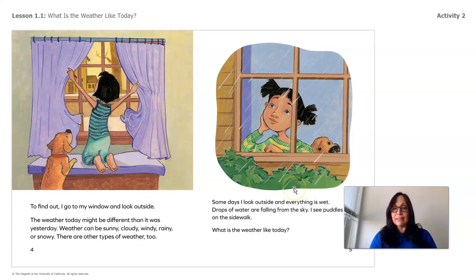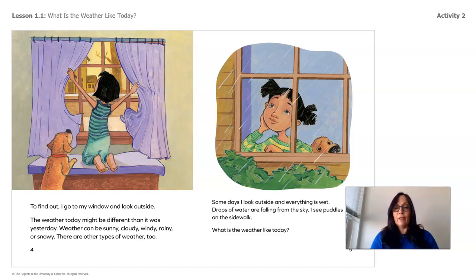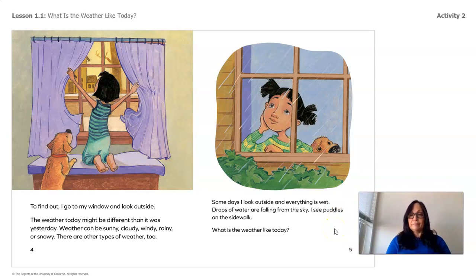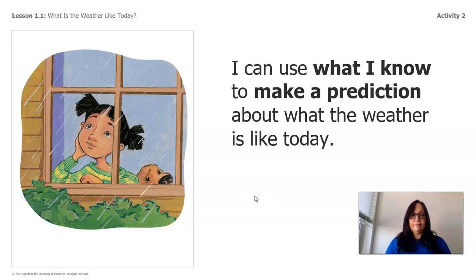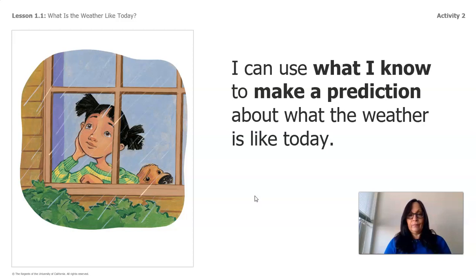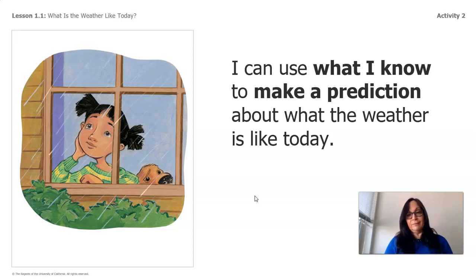Some days, I look outside and everything is wet. Drops of water are falling from the sky. I see puddles on the sidewalk. What is the weather like today? I can use what I know to make a prediction about what the weather is like. So if you look at the picture, you see a little girl looking outside. She's making an observation, and with her observation, she's able to make predictions. What do you think it looks like outside? Could the leaves be wet? Could there be puddles on the sidewalk?